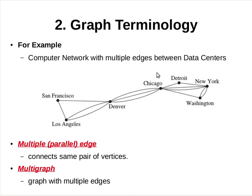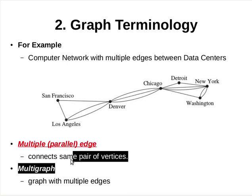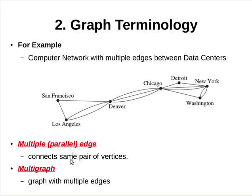To model such networks, we need graphs with multiple edges connecting the same pair of vertices. Graphs with multiple edges are called multigraphs. Note that multiple edges are also called parallel edges.